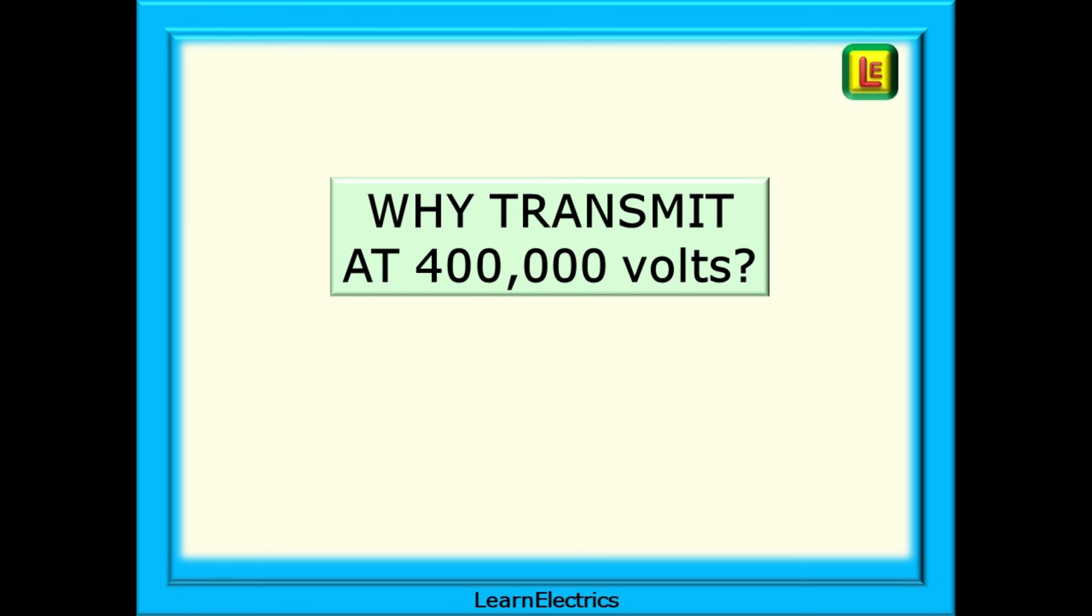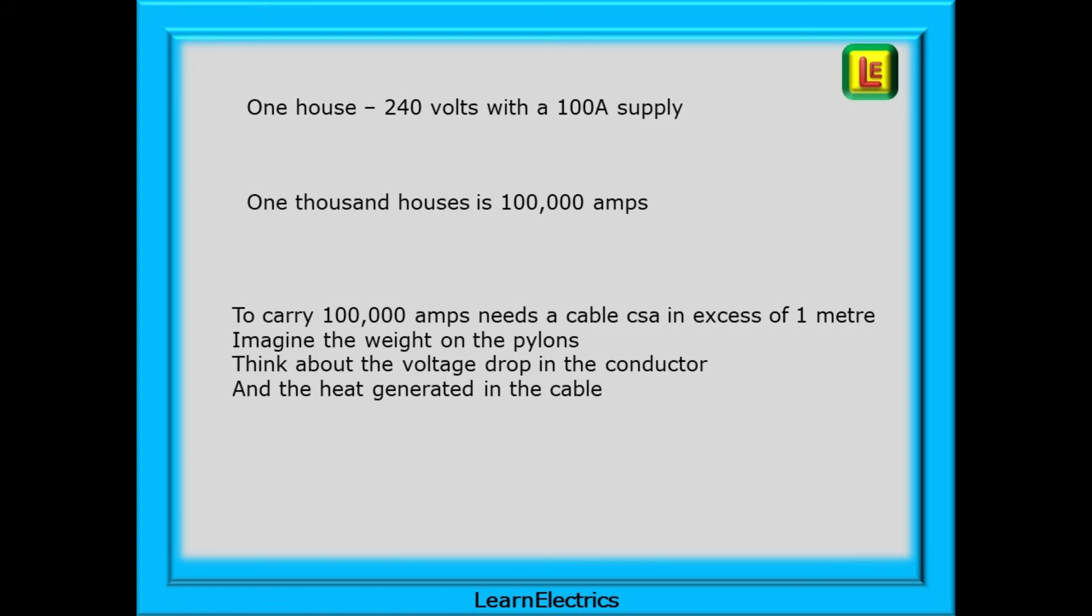The final question for this video is why do we transmit at 400,000 volts and go through all this palaver of step-up and step-down transformers? And isn't 400,000 volts a lot more dangerous than 230 volts? Well, let's look. Keeping the maths very simple, if we have one house with a 240 volt supply and a maximum demand of 100 amps, then 1,000 houses will require 100,000 amps. To carry 100,000 amps with a 240 volt supply, we will need a cable with a cross-sectional area in excess of one meter. Imagine the weight on the pylons for mile after mile across the landscape, and think about the voltage drop in the conductors. It's going to be massive, not to mention the heat generated in the cable as well. And that is just for a thousand homes. In reality, this could be many thousands of properties with many thousands of amps required.